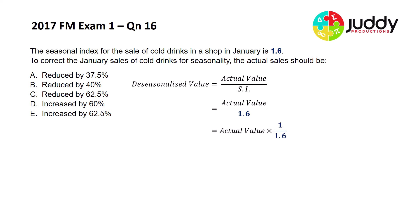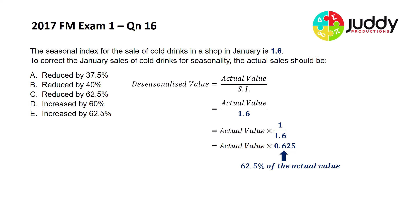Another way of writing that is to multiply the actual value by the fraction 1 over 1.6, which is the same as dividing by 1.6. Now 1 over 1.6 as a decimal is 0.625. So the de-seasonalized value is 62.5% of the actual value. That's less than 100%, so that's a reduction. Taking 62.5 away from 100 gives a reduction of 37.5%. So answer A is correct.